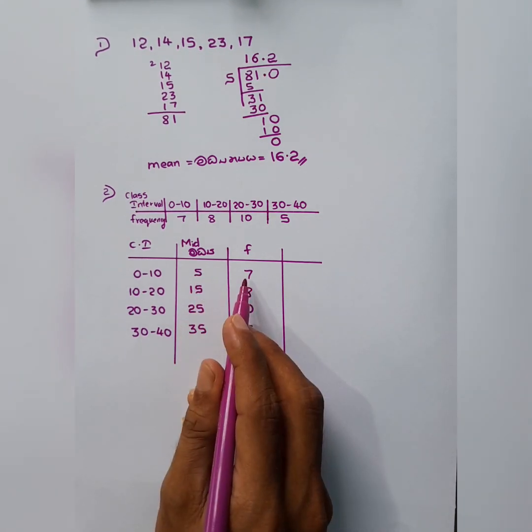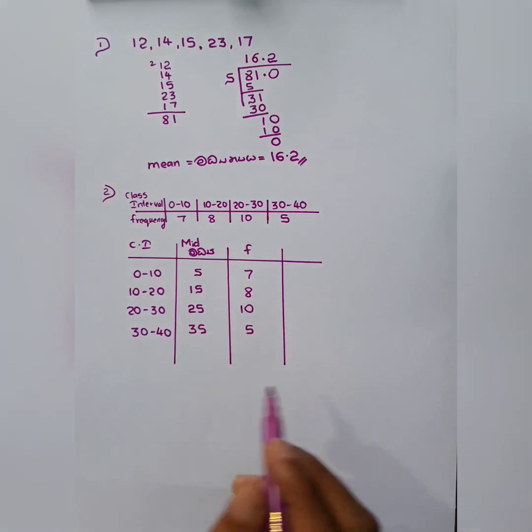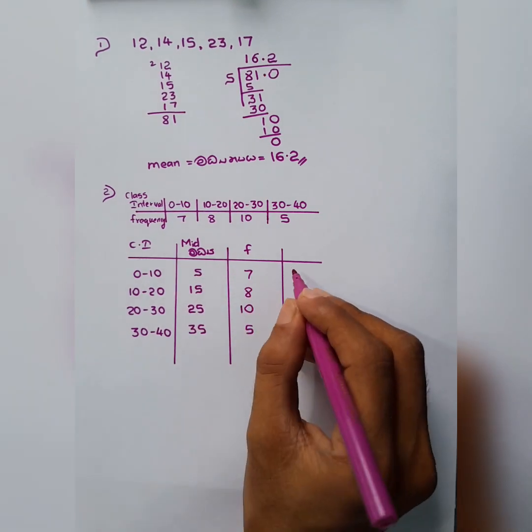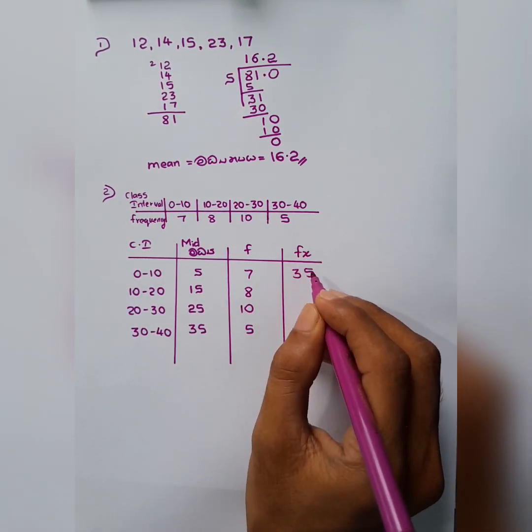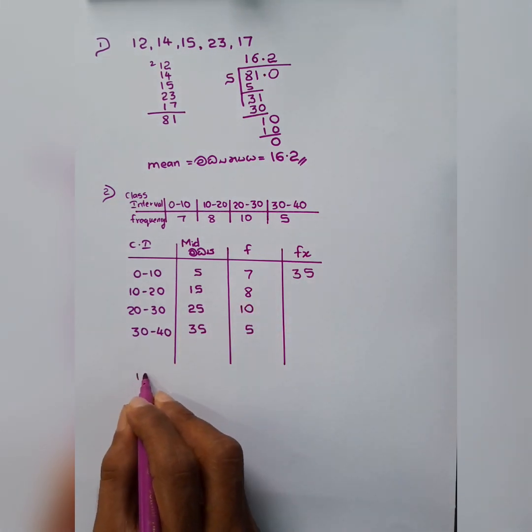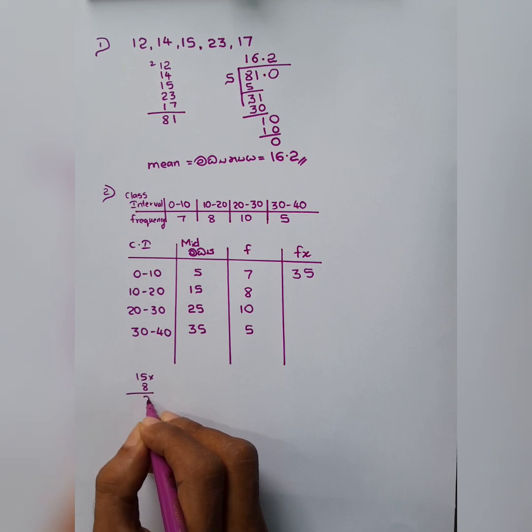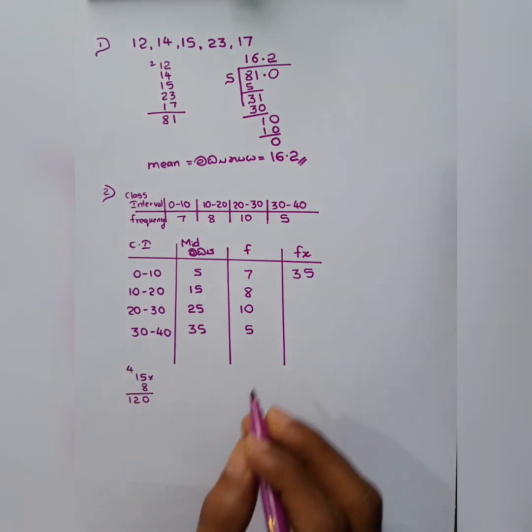And now we have to multiply. Multiply and show in a corner. 5, 7's are 35. That's very easy. FX chart. We'll multiply. And 8, 5's are 40. 8, 1's are 8 plus 4 is 12. 120.